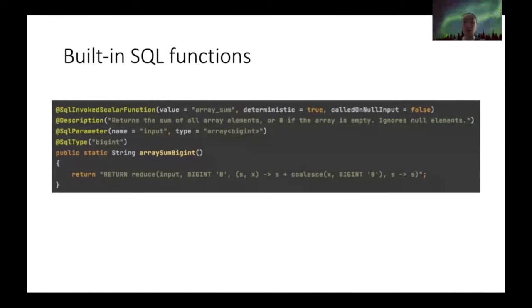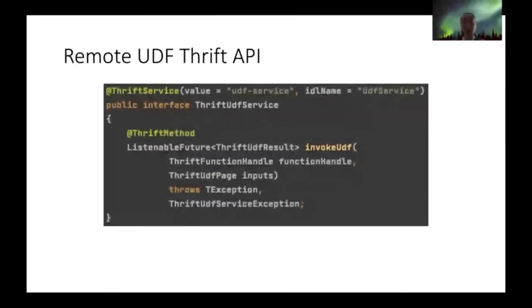For remote functions, we made planner changes to ensure that when we need to run a function remotely, we do it per page instead of per row. The function namespace managers can be configured to manage external functions, and in that case the manager needs to know how to run them — we provide a Thrift executor for this. Looking at the plan, we break the project into local and remote project nodes; from the remote project node, we send the page over to the UDF server for processing. You need to implement a simple Thrift service with an Invoke UDF API, and once the server is set up, you can hook up Presto to execute functions remotely.